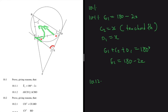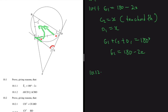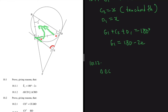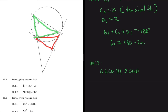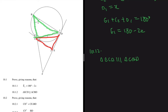Moving to 10.1.2 — proving that E1 equals 180 minus 2x doesn't give us any new keyword, so we answer 10.1.2 using tangent again. We are required to prove that triangle ECD is similar to triangle CBD. When proving similarity you need two angles to be equal to each other; once two angles are equal the third must also be equal, and you've proved the triangles similar.